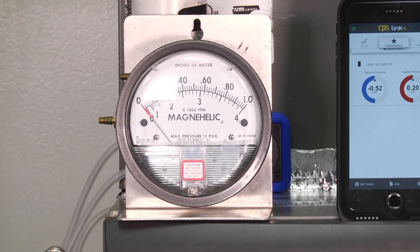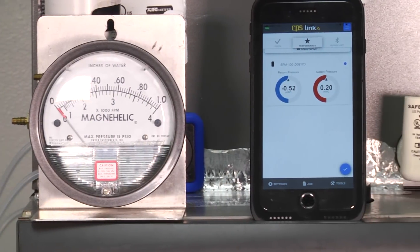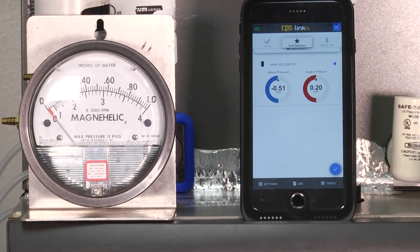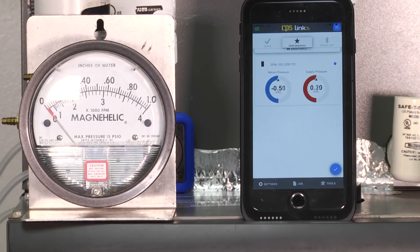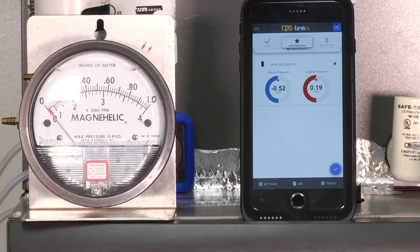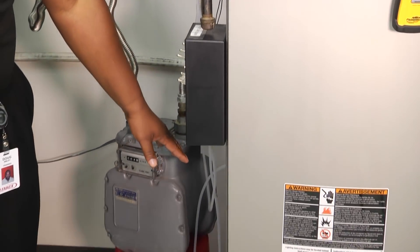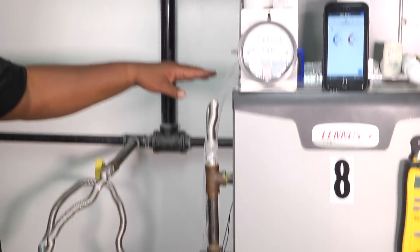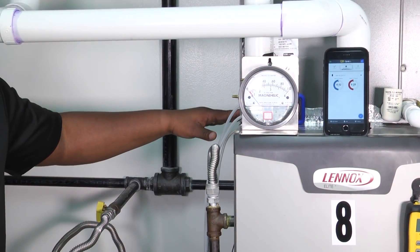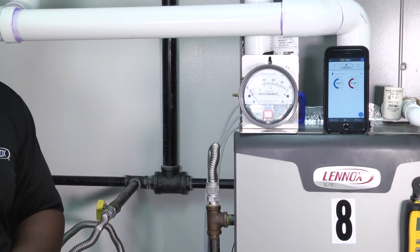Now we've got our static pressure readings going on our system. A couple things we can do: when we take these two and add them together, this gives us our total static pressure. We need both the reading from the return side and a reading from the supply side to get the total. We're inserted right after the filter but before the blower, and then right before we get to our coil to take that measurement.